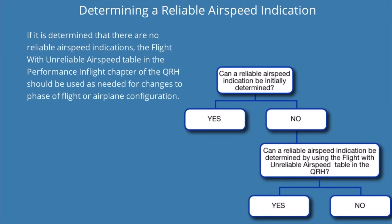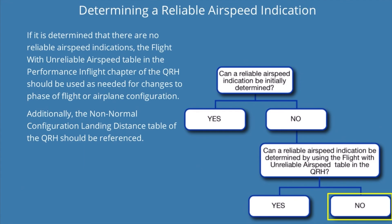If it is determined that there are no reliable airspeed indications, the flight with unreliable airspeed table in the performance in-flight chapter of the QRH should be used as needed for changes to phase of flight or airplane configuration. Additionally, the non-normal configuration landing distance table of the QRH should be referenced.